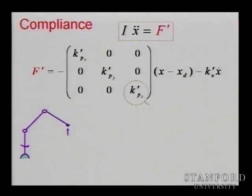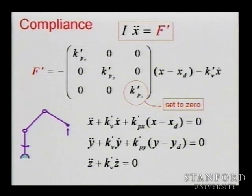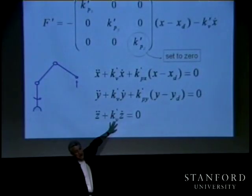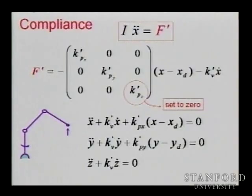Just by making Kp equal to zero, you get those relations: stiff in X, stiff in Y, and in Z you only feel the damping Z-dot. So we can create compliance this way. But actually, what we want to do is not only create compliance — we want to control the contact force.